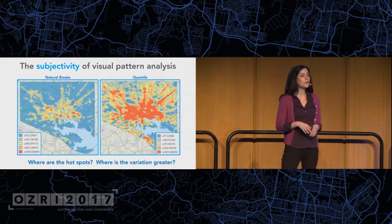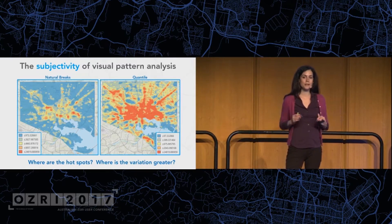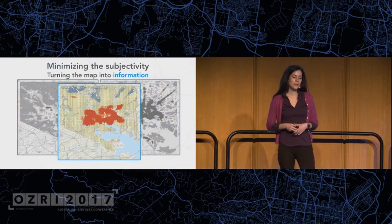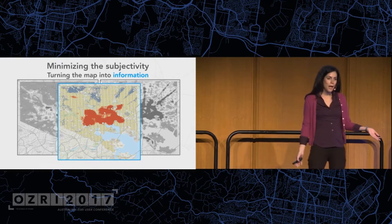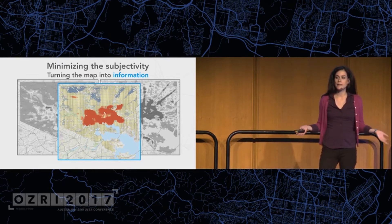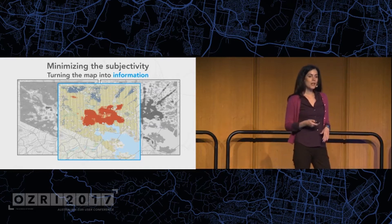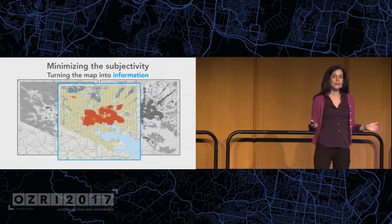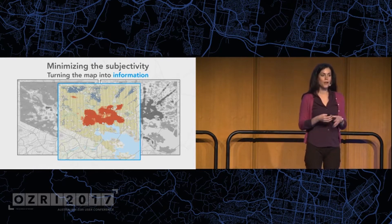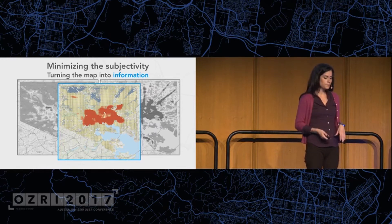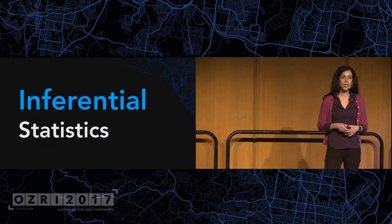I'd like to introduce a couple of ways we can minimize that subjectivity through spatial statistics. This result here is the result of a hotspot analysis. You might be thinking: there's red and blue on the map — how is that any less subjective? It's less subjective because we're now using inferential statistics to determine what the darkest red and darkest blue are. The dark red areas are clusters of high values, the blue areas are clusters of low values, and we use inferential statistics to determine that.